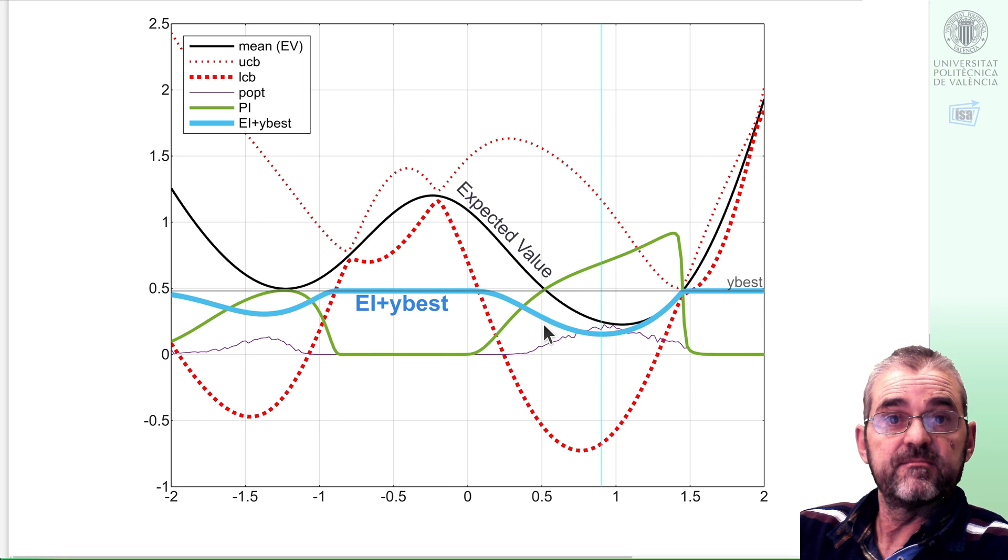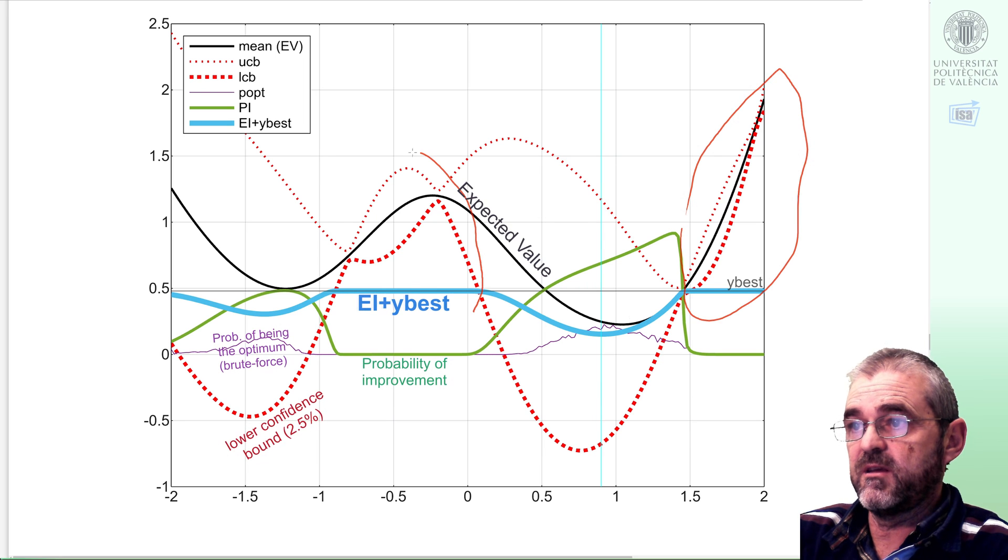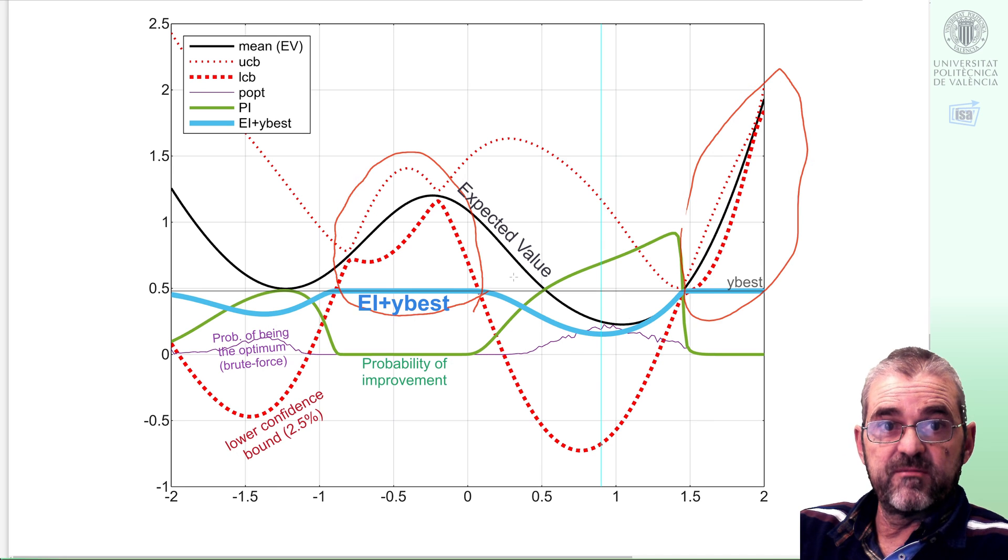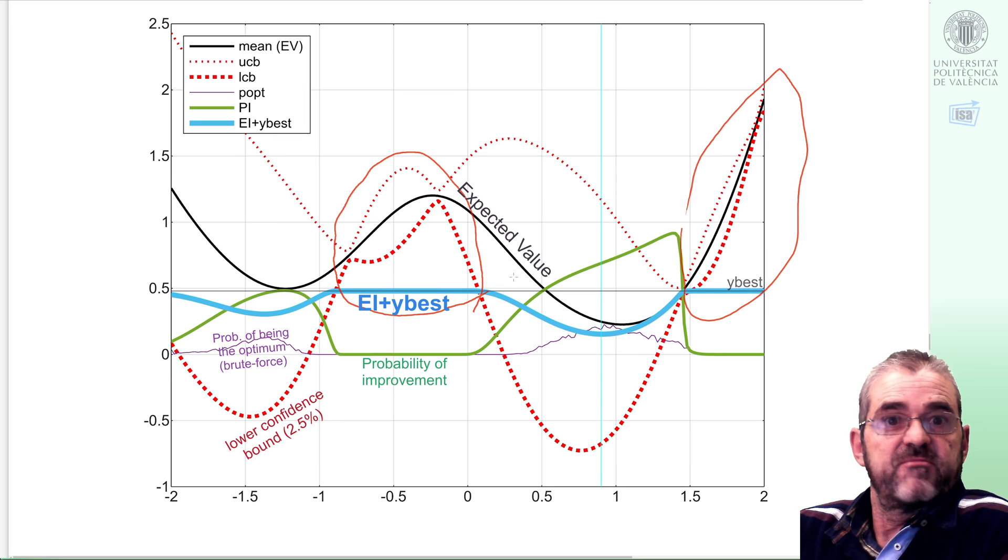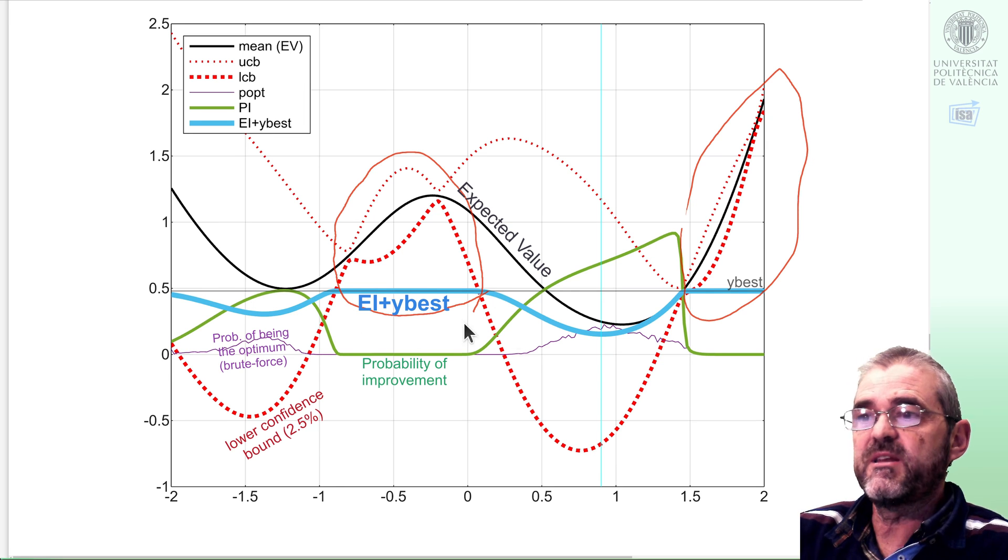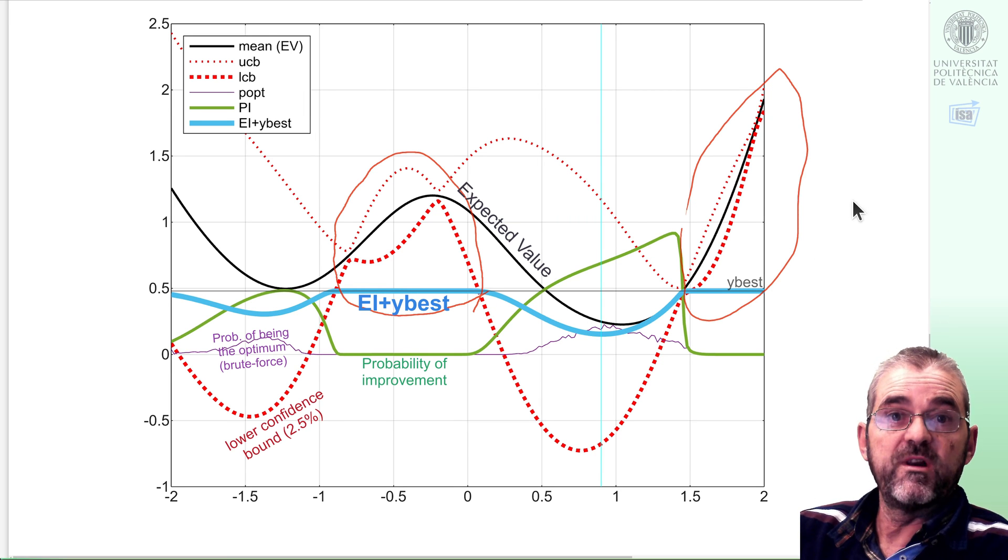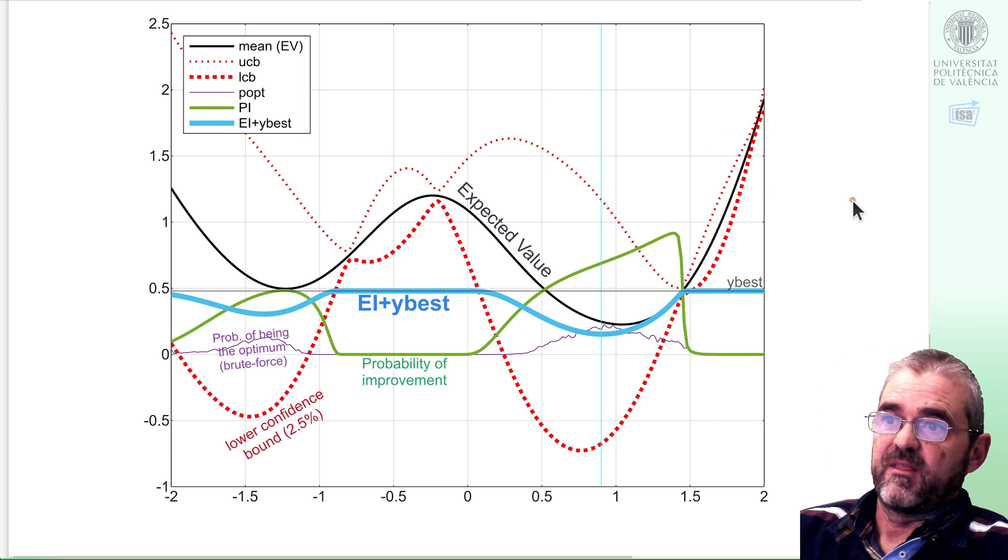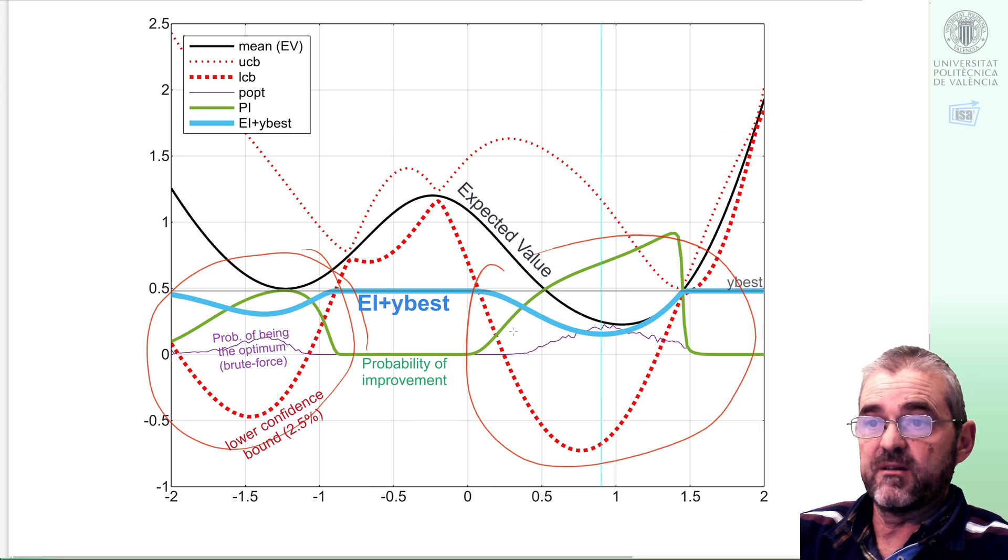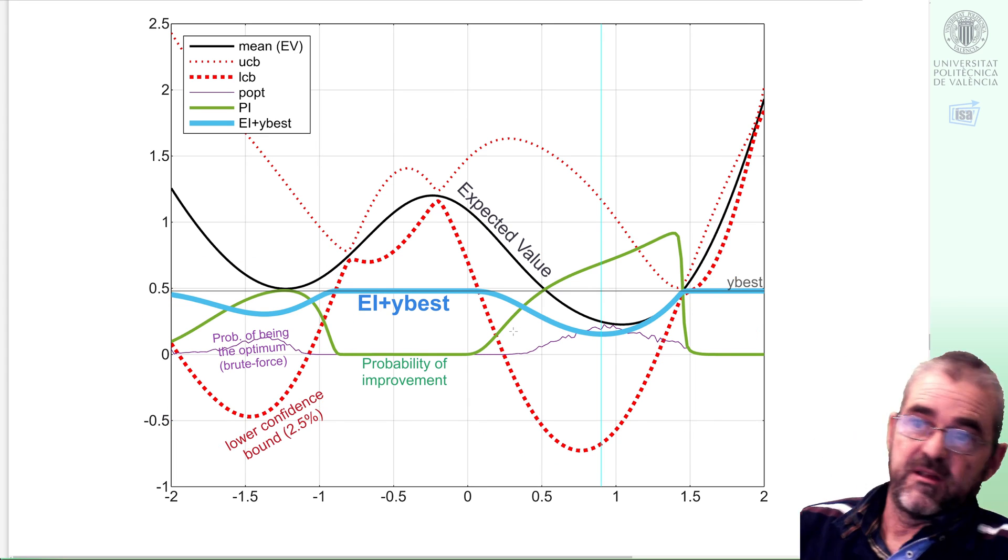What people call expected improvement is carrying out this integral only up to y best. Because if I get an offer above y best, I can secure my purchase at the y best price, so it counts zero. This is the good formula. And integrating by parts and doing some manipulations, we get this formula. The important thing is not the derivation of this formula, it's just understanding why I am integrating only up to here and understanding the difference between the two scenarios.